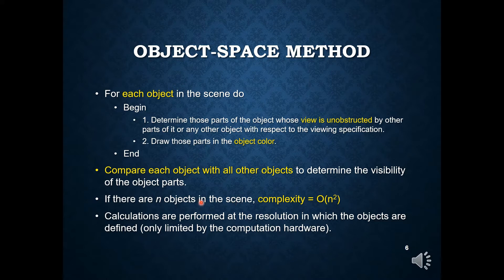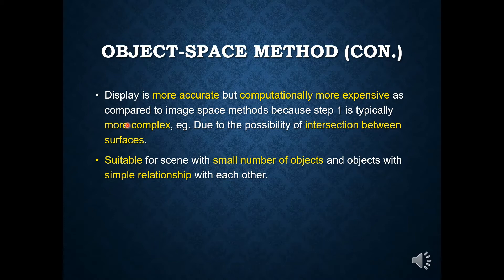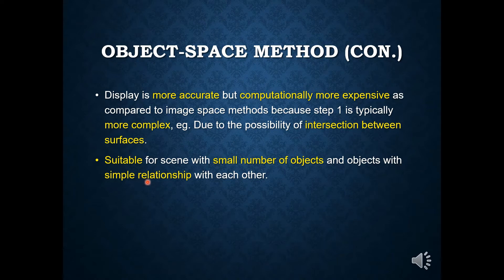If there are n objects in the scene, the complexity equals O(n²). The calculations are performed at the resolution in which the objects are defined and are only limited by computation hardware. The display for object space method will be more accurate but more computationally expensive compared to image space, because the comparison is more complex due to possible intersections between surfaces. This method is suitable for scenes with a small number of simple objects.